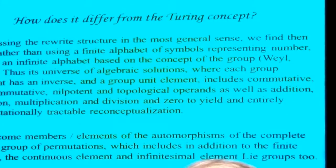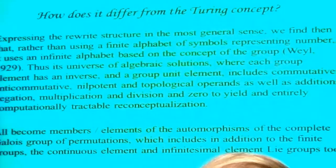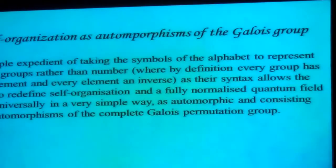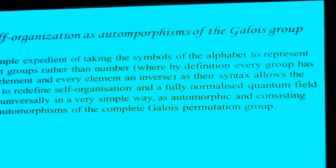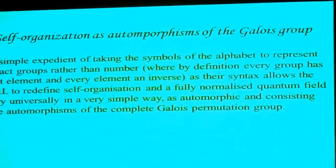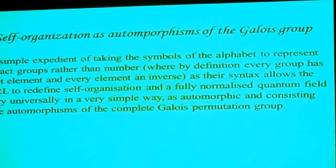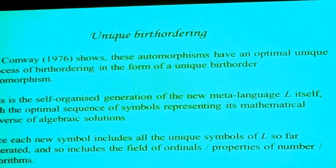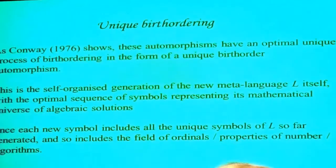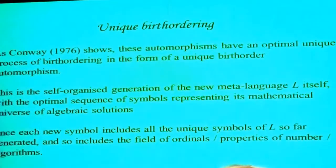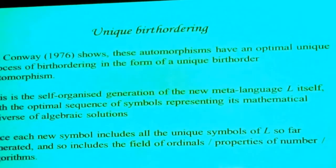All members or elements of the automorphisms become members of the automorphisms of the complete Galois group of permutations, because you can represent any group as a permutation group ultimately. If we take the symbols of the alphabet to represent abstract groups rather than numbers, the syntax allows the language to redefine self-organization as a fully normalized quantum field theory in a very simple way — as automorphic. Conway has shown that these automorphisms have an optimal unique process of birth ordering in the form of a unique birth order automorphism. We get the unique birth ordering again.